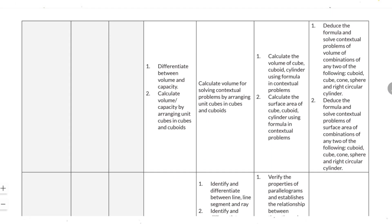Next, differentiate between volume and capacity. Calculate volume by arranging unit cubes, and solve contextual problems by arranging unit cubes in cube and cuboid shapes. Using formulas, calculate the volume and surface area of cube, cuboid, and cylinder. Then deduce the formula and solve contextual problems on volume — including combinations of any two shapes: cube, cuboid, cone, sphere, and right circular cylinder.